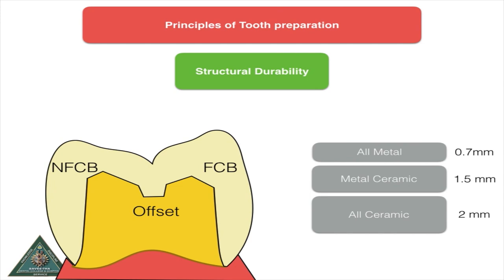For the non-functional cusp bevel, you can have a 0.5 mm reduction. For offsets, that is in the center of the occlusal groove, you want to have an occlusal offset which looks like a very shallow Class I cavity of 0.5 to 1 mm depth.